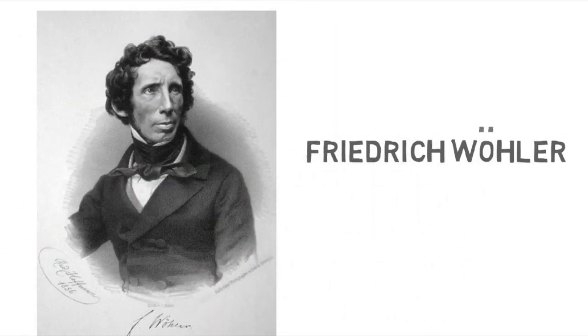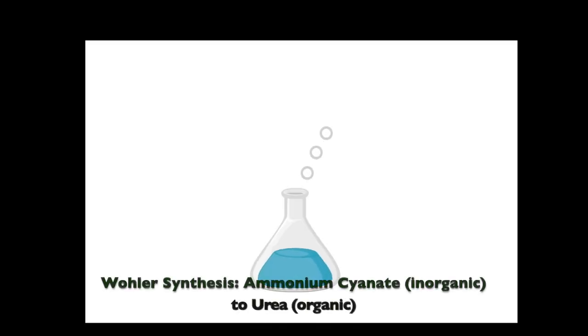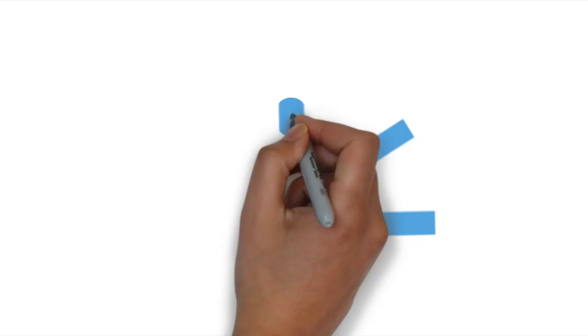But in 1828, a scientist named Friedrich Wuhler accidentally made something organic from some inorganic substances, and that messed that theory up. So if we can't easily divide stuff up the old-fashioned way, how can we tell the difference?